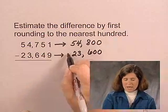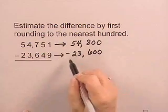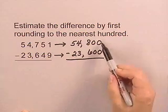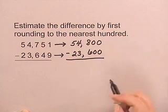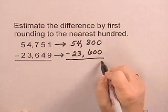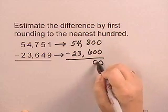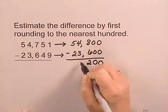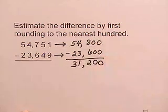And we're to subtract those rounded numbers. Showing the rounded intermediate numbers is showing your work for the situation. Rounding and subtracting, we have 31,200.